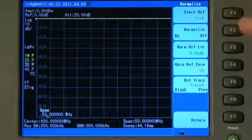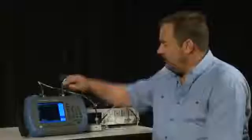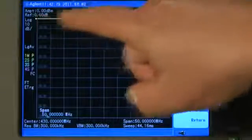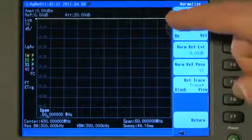And you will see that the trace now has normalized and calibrated itself to remove all the errors from the cable and the bridge. And the trace is at 0 dB at the top of the display.